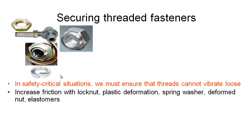Here is a special type of nut called a deformed nut. On one end it goes down to a smaller circular cross section with slots cut out, and this nut is plastically deformed to bend those ends inward. When the bolt comes through, it has to elastically deform these bent sections outward, which increases friction and generally stops the nut from coming undone unless a large torque is applied.